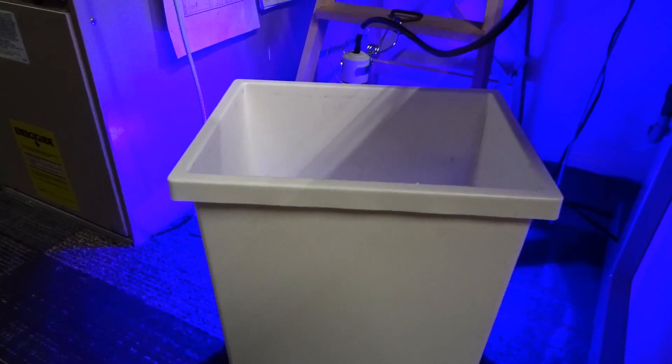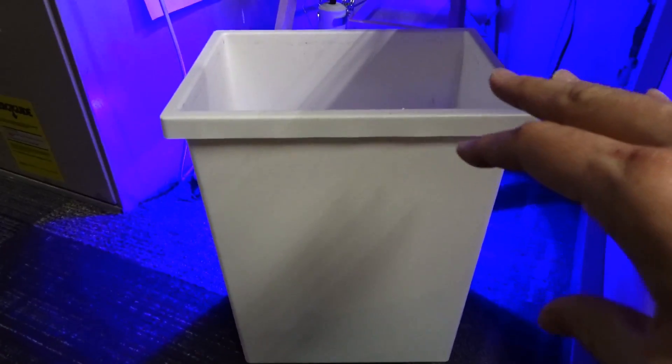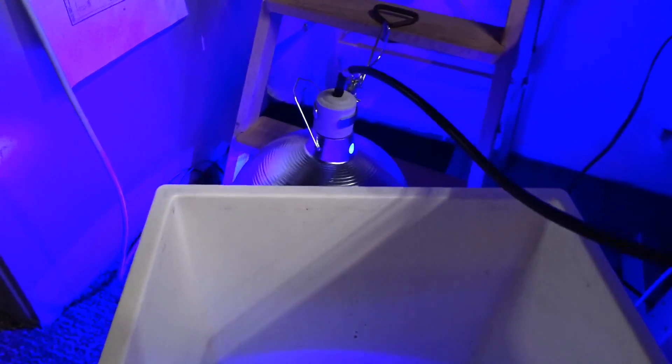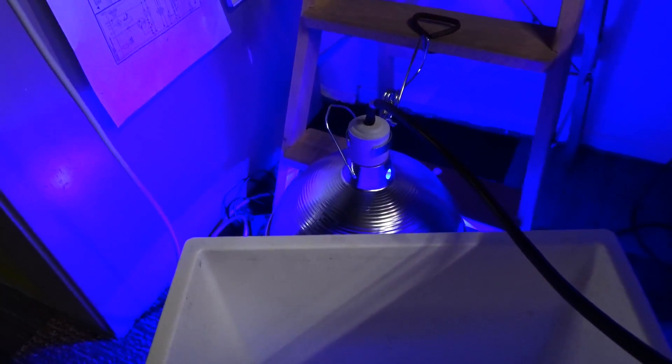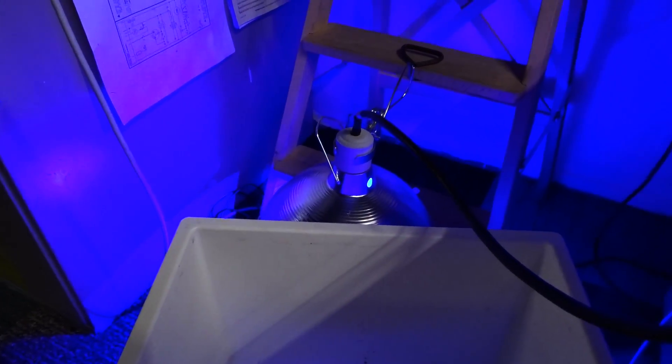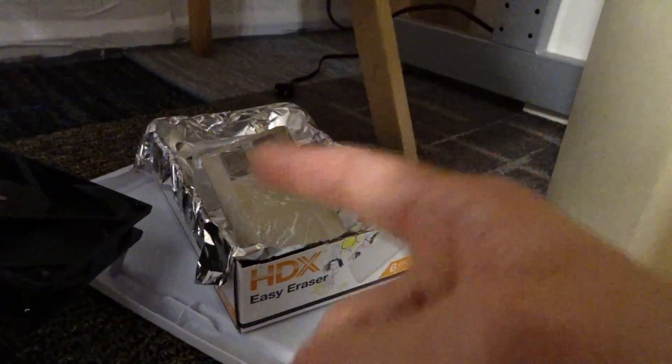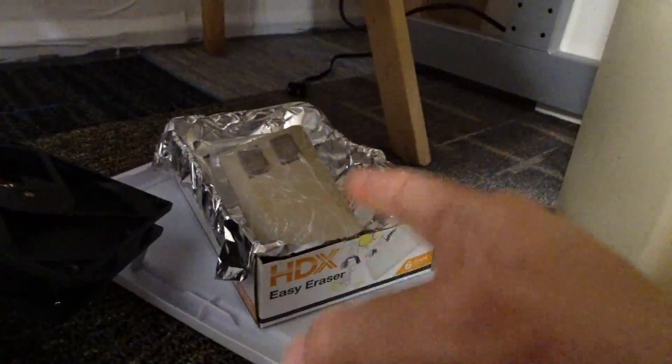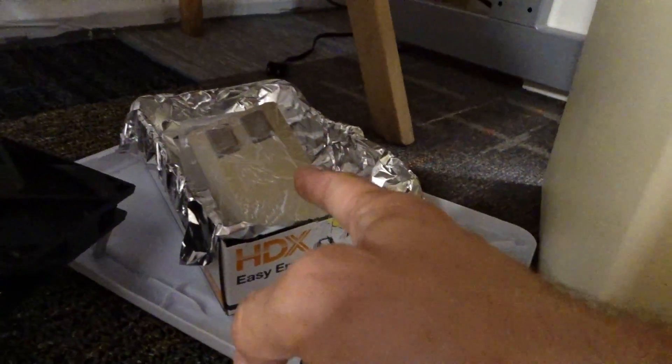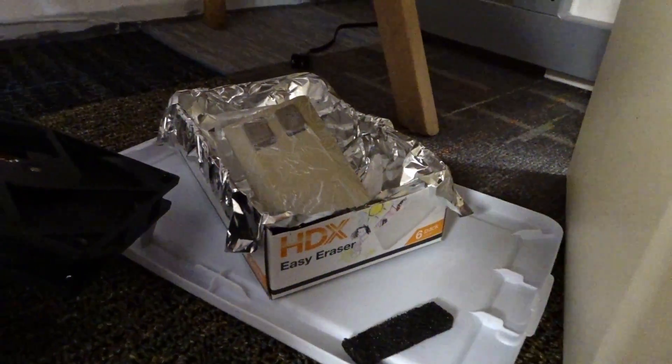So at the start of the video you saw this blue glow coming from over here. What you can imagine now is that I have a little thing set up here with something actually being retrobrited right now. Let me unplug the lamp first. I have an Amiga mouse wrapped in plastic wrap and I have the cream, the volume 40 cream under there.